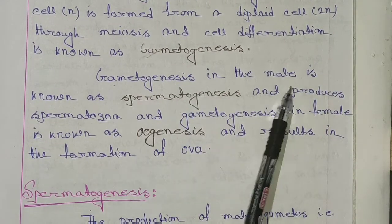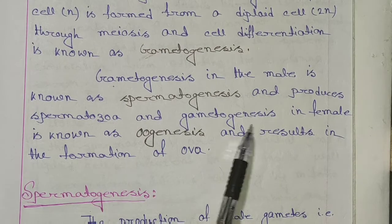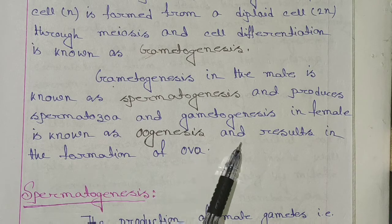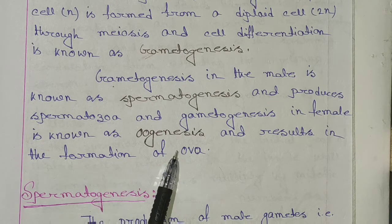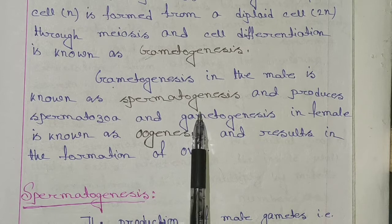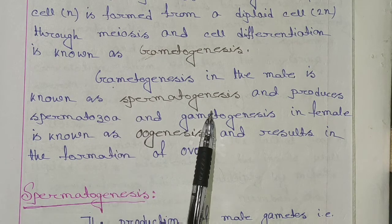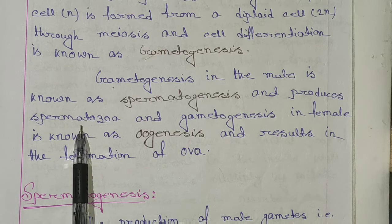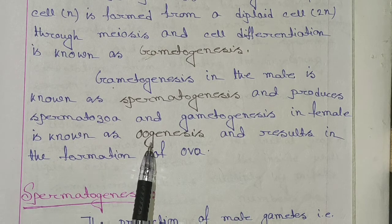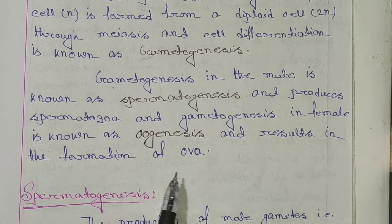Gametogenesis in the male is known as spermatogenesis and produces sperm. Gametogenesis in the female is known as oogenesis and results in the formation of ova. Purusho ka gamet produce hone ka jo process hota hai usi ko spermatogenesis, aur striyo ka oogenesis kehte hai.